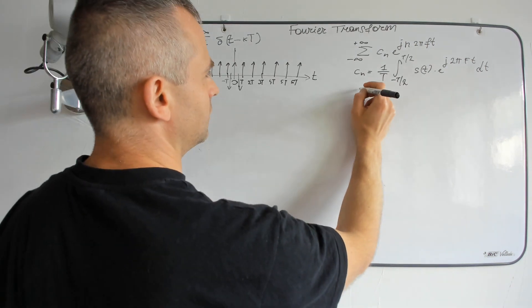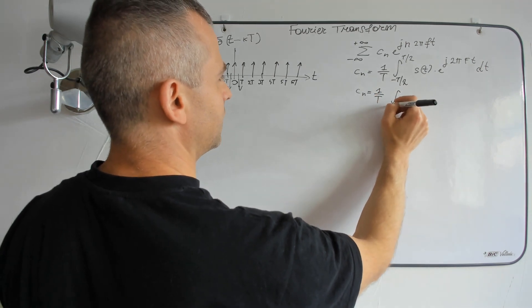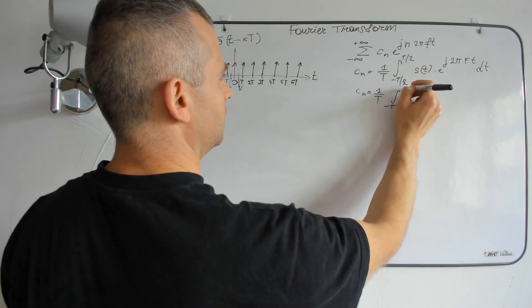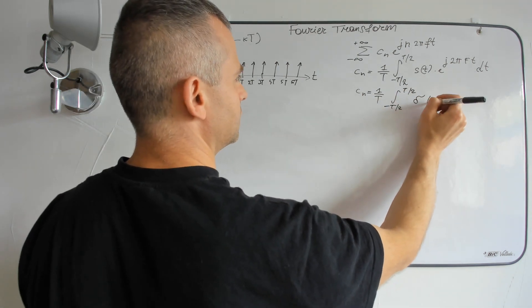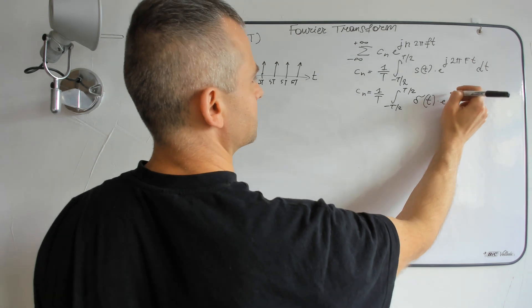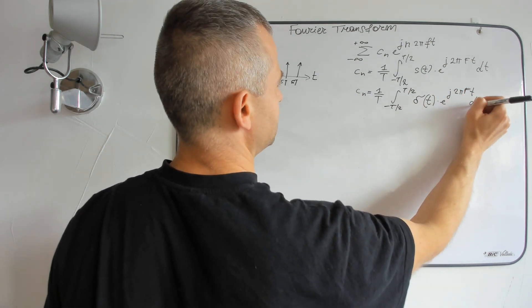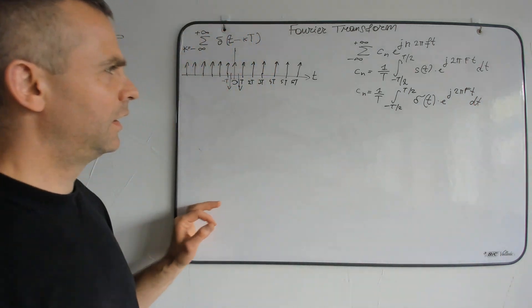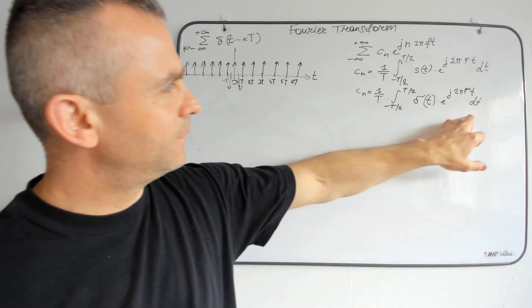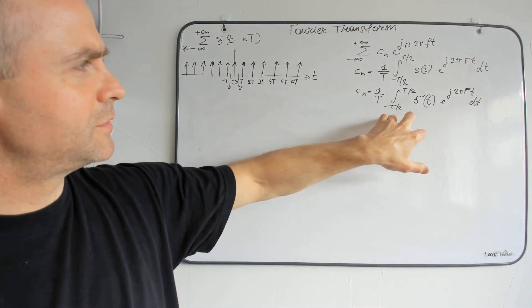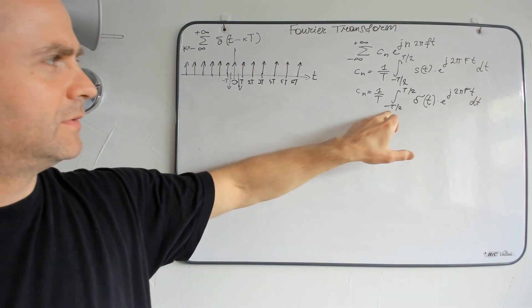So, I can write my integral as delta function here multiplied by exponential 2πf t dt.